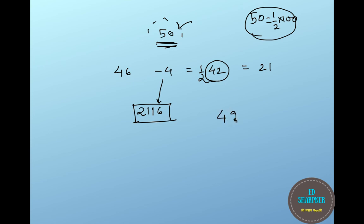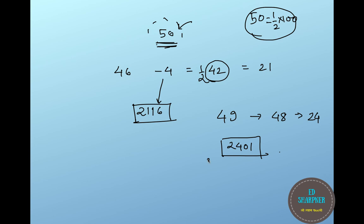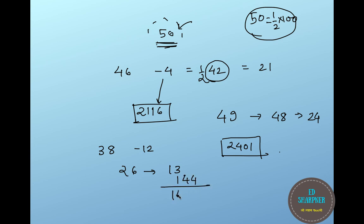The square of 49: subtract 1 from 49 to get 48, then halve 48 to get 24. Put the square of 1 after 24 to get 2401. The square of 38: subtract 12 from 38 to get 26. Half of 26 is 13. Put the square of 12, which is 144, starting below the units digit of 13, and add to get 1444. So 1444 is the square of 38.